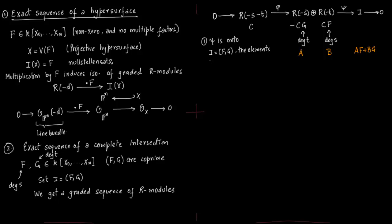First thing notice that this psi is onto. Why is it so? Because the ideal (f, g) is of the form, these are the elements which are there in af + bg. That is the definition of ideal generated by two elements f and g. The elements are of the form af + bg where a and b come from the graded R. Notice that af has degree zero, bg also has degree zero. Now we have to show the kernel of psi equals image of phi.